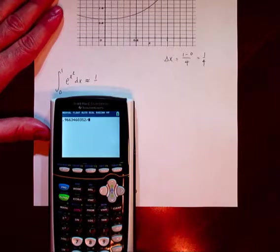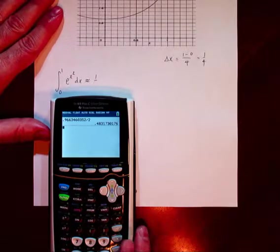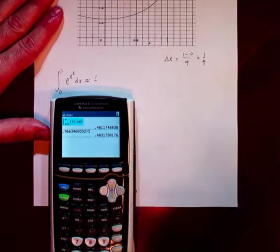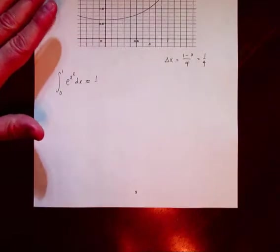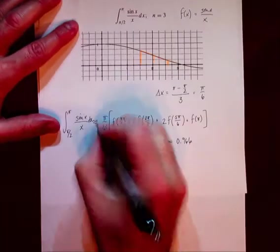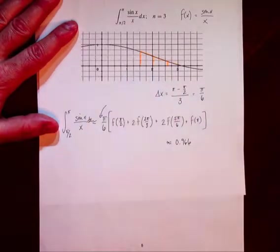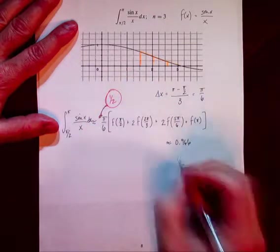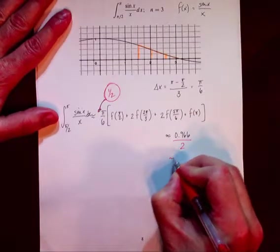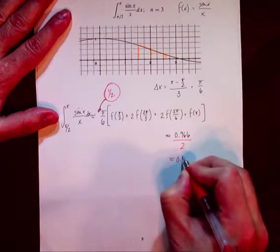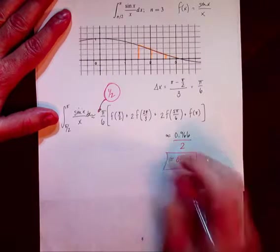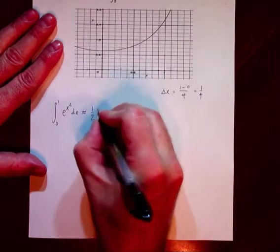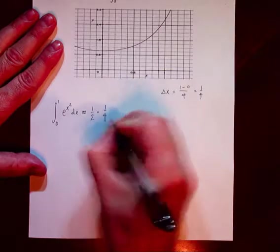I just forgot to divide by two — that's what happens when you talk and teach at the same time. So that actually was a really good approximation. You need to slide in a one-half there, so that previous answer becomes divided by two, equal to 0.483. Alright, let's remember the one-half this time: one-half times the delta x.